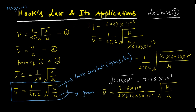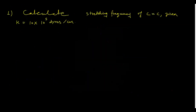An important note: if the mass values are given in grams in the problem, you can directly use the full equation nu-bar = 1/(2πc) × √(k/mu) without needing Avogadro's number. But if mu is given in atomic mass units, you must include the 6.023×10²³ factor to arrive at the simplified equation nu-bar = 4.12√(k/mu). Choose accordingly.